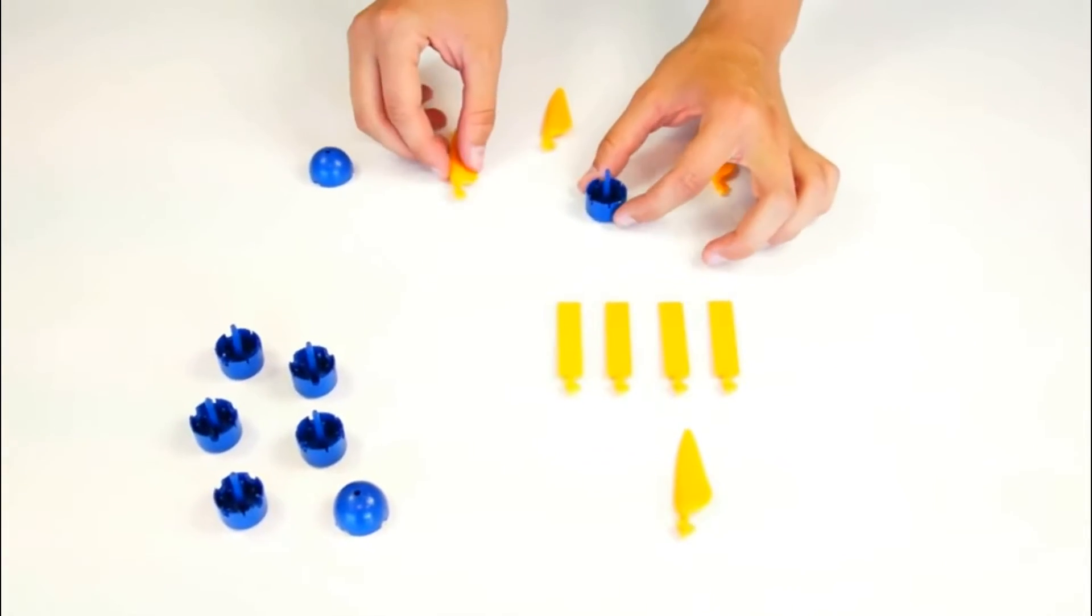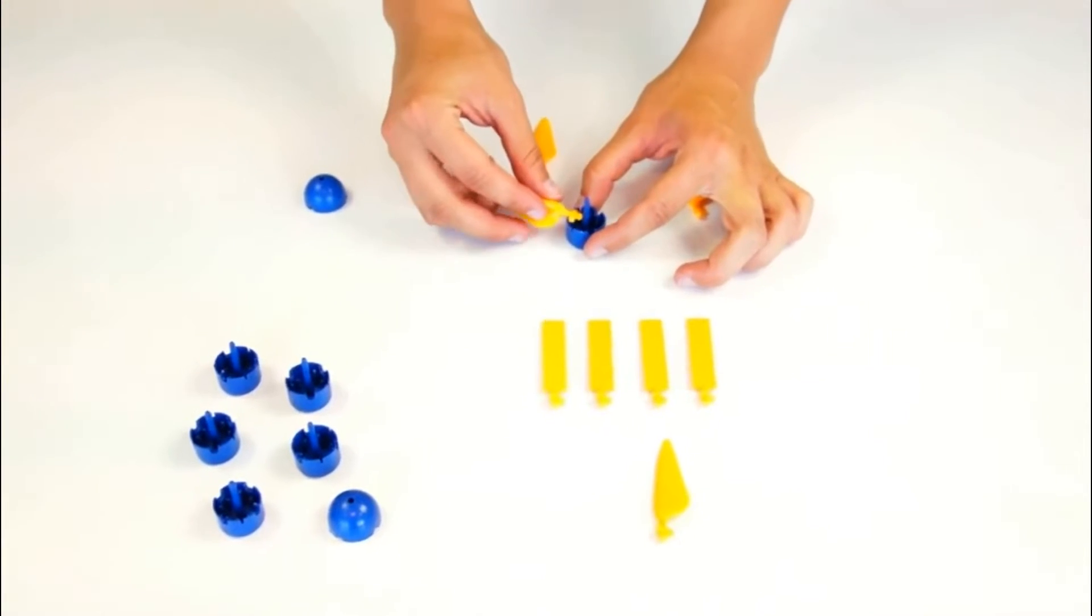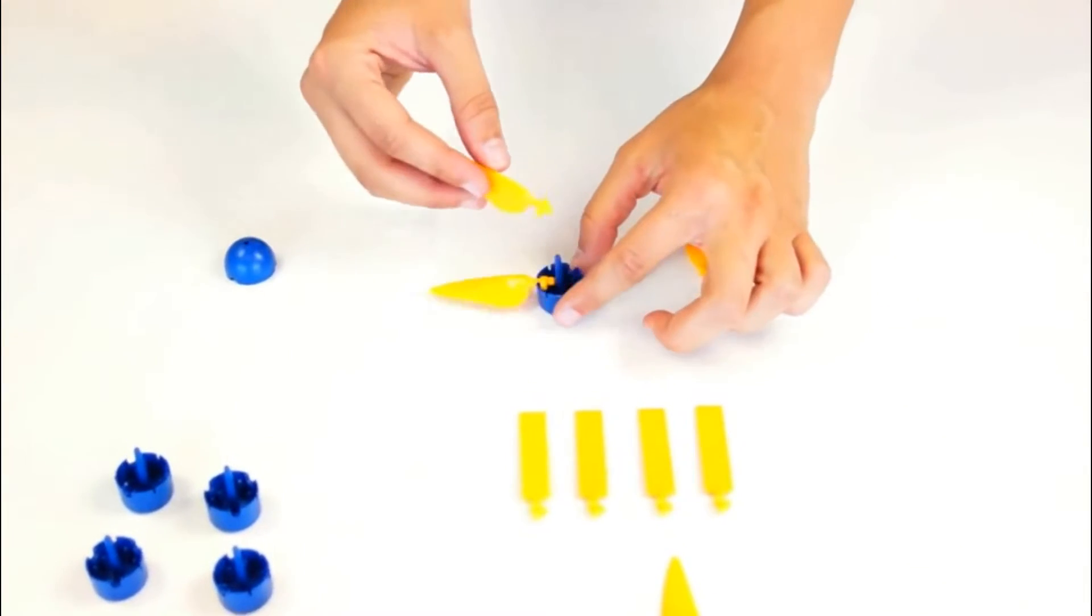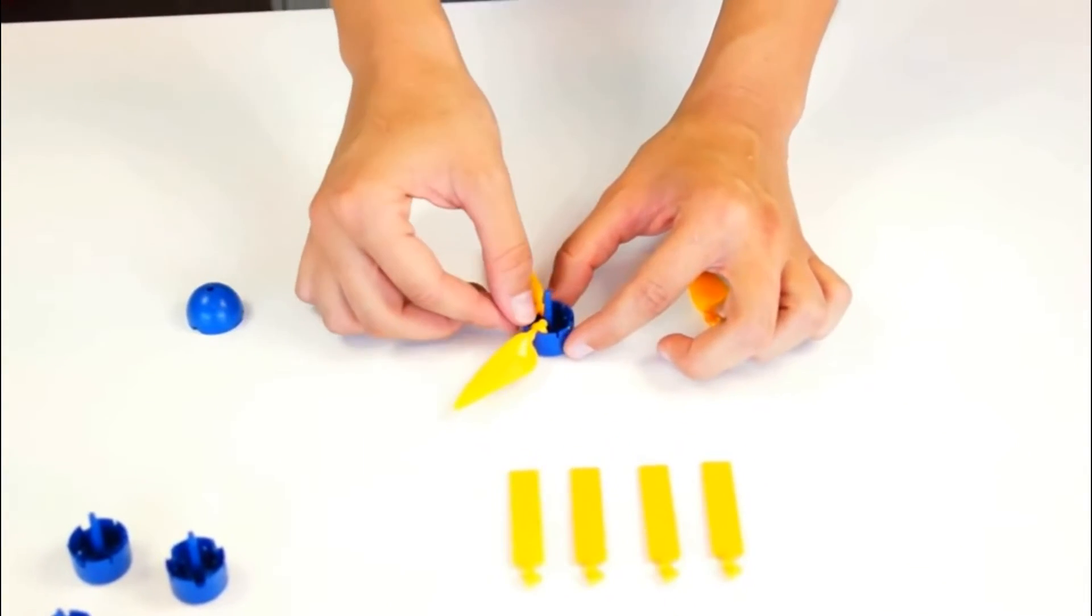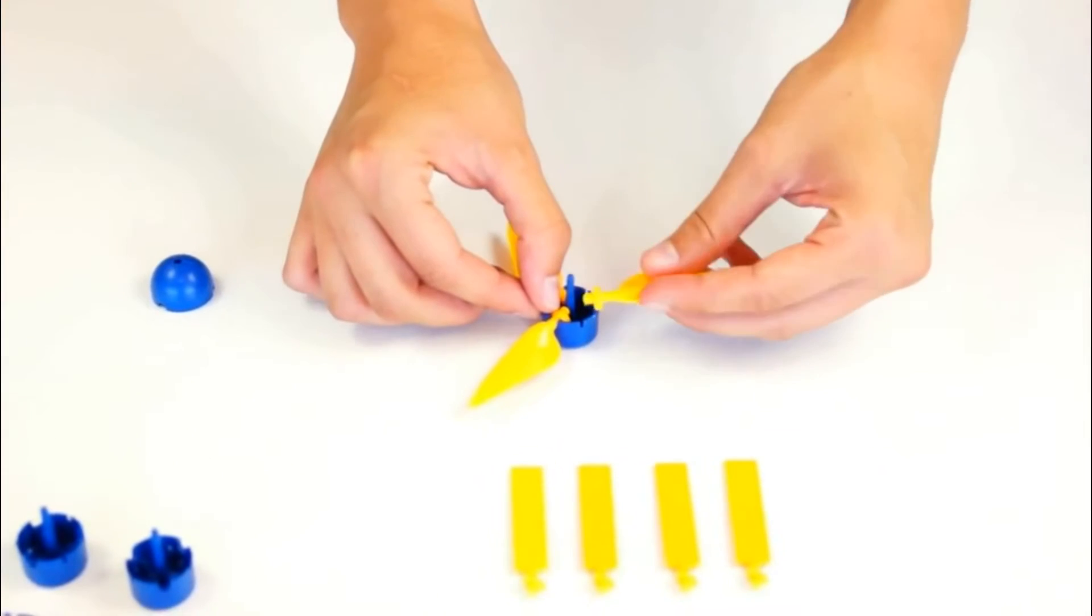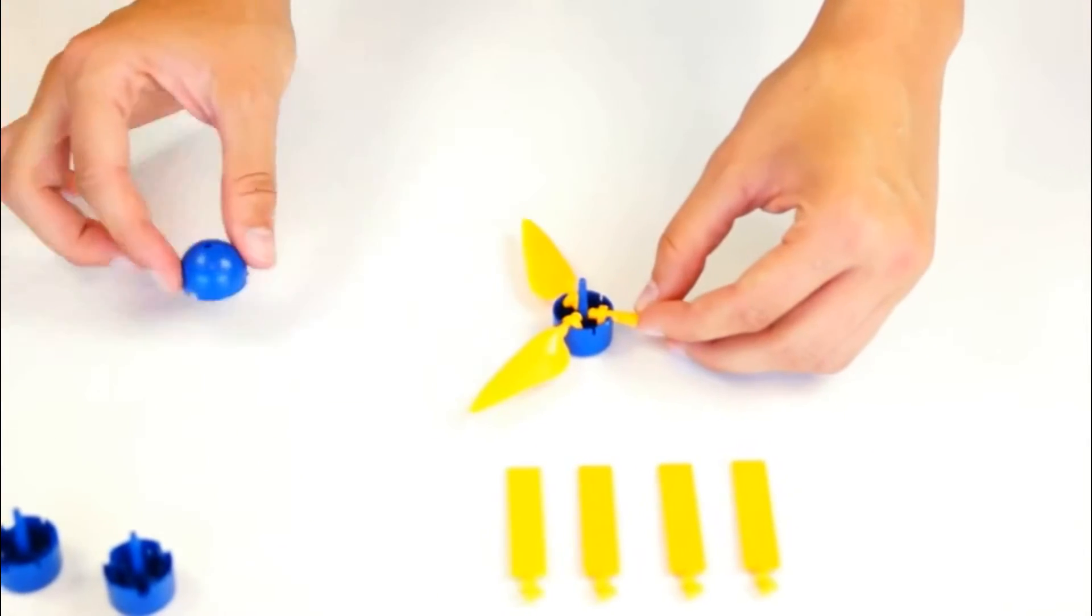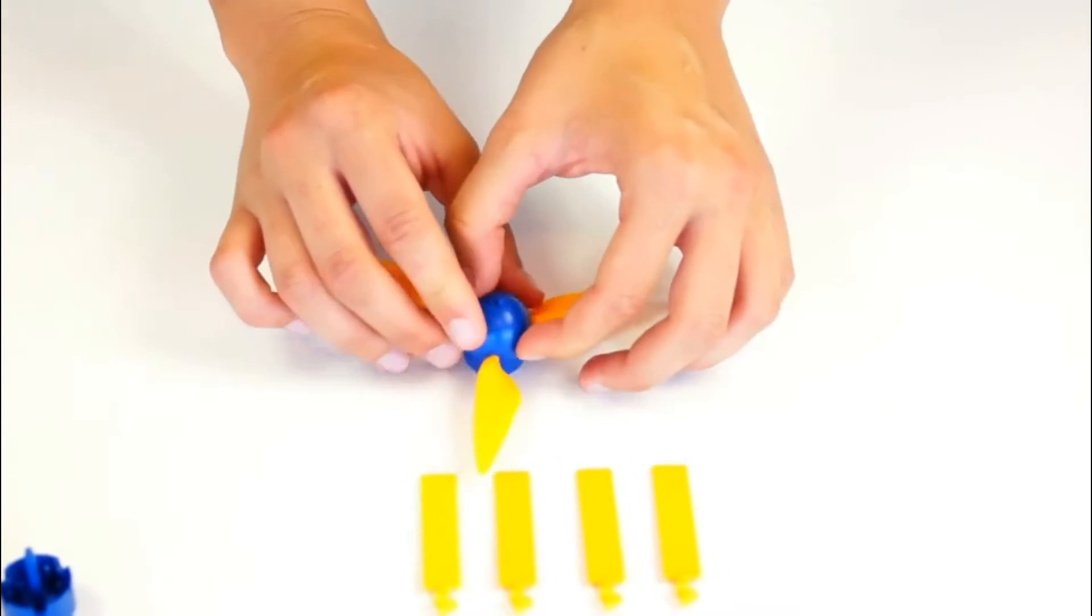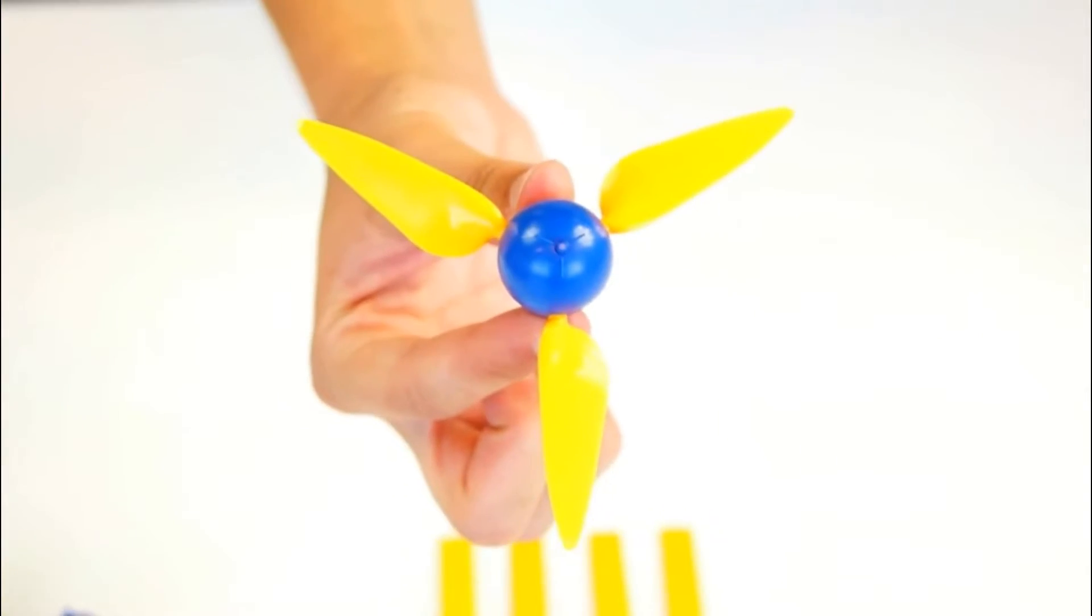First of all the rotor blades are inserted into the small recesses of the hub. Make sure that the rounded side is facing up. After all three rotor blades are adjusted the cap can be placed easily and firmly. And now our wind rotor is finished.